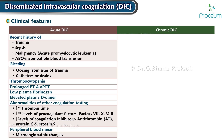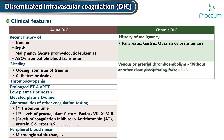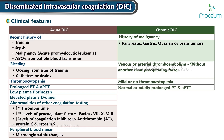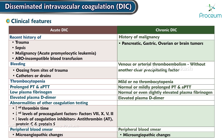Chronic DIC. There is usually a history of malignancy, especially pancreatic, gastric, ovarian, or brain tumors, venous or arterial thromboembolism especially without another clear precipitating factor, mild or no thrombocytopenia, normal or mildly prolonged PT and APTT, normal or even slightly elevated plasma fibrinogen, elevated plasma D-dimers, and microangiopathic changes on peripheral blood smear.